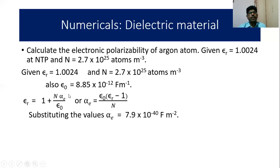We know ε₀ = 8.85 × 10⁻¹² F/m. The formula is εᵣ = 1 + Nαₑ/ε₀, or αₑ = ε₀(εᵣ - 1)/N. When you substitute, you get αₑ = 7.9 × 10⁻⁴⁰ F·m².